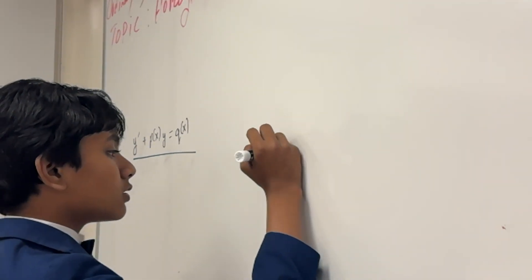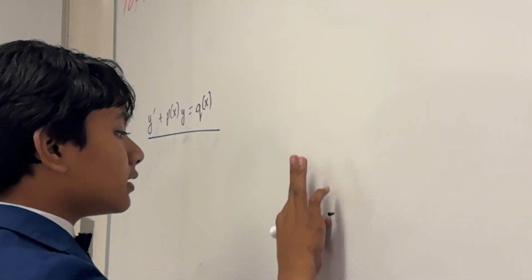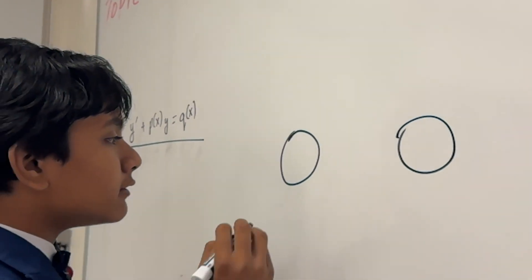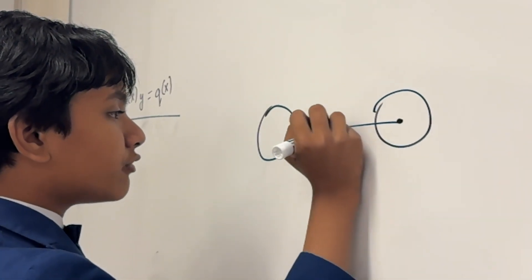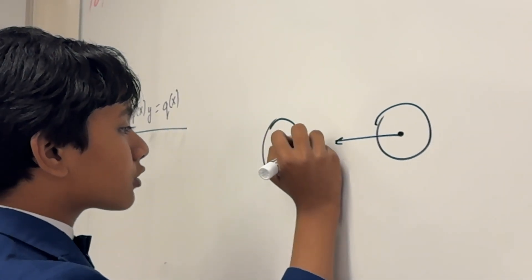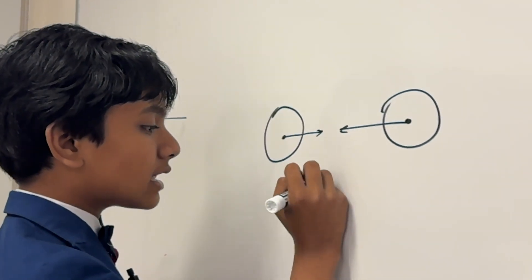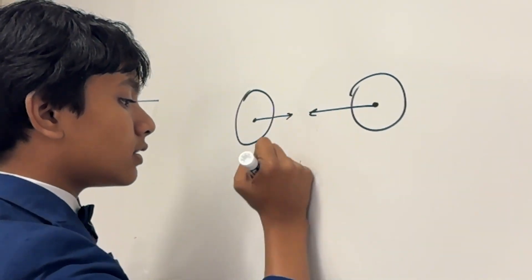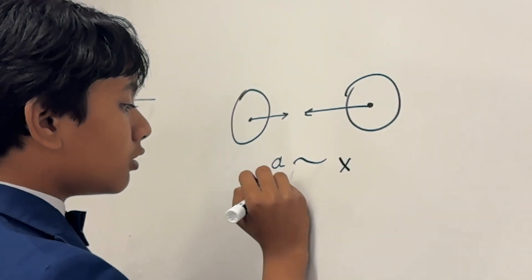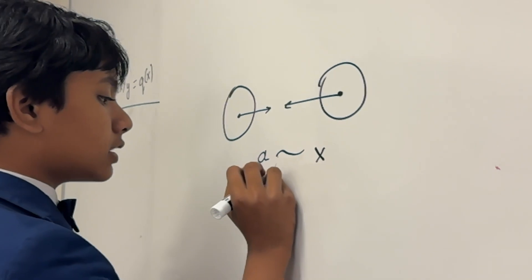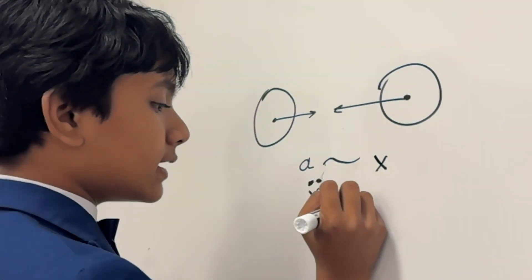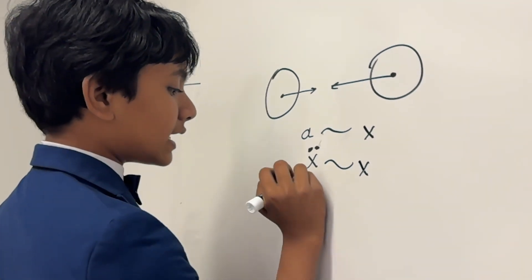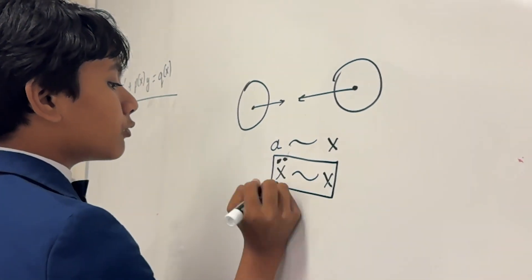For example, gravity. Let's say you have two planets that are orbiting around each other. The gravitational force that they exert on each other, and thus their acceleration, is dependent on their position. So that means that the double derivative of position is dependent on position itself. These are the second-order differential equations that we want to solve.